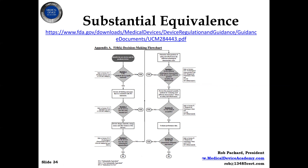Decision points four, five A, and five B are where a lot of the testing comes in — to try to show that the differences in technological characteristics are acceptable. And you can often negotiate that with the FDA. That's where some experience comes in handy, knowing what questions to ask the FDA.